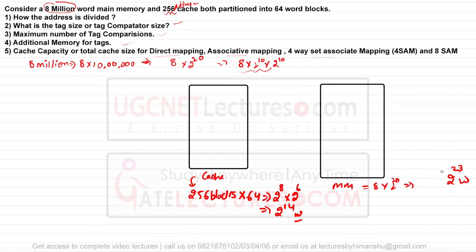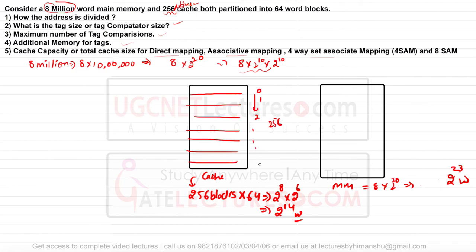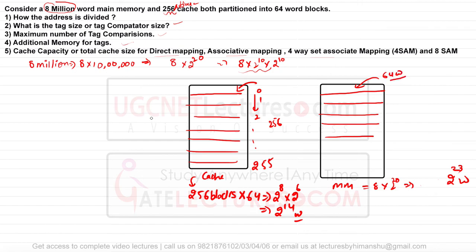The cache memory has 256 lines, numbered 0, 1, 2, up to 255. The size of every line — or block — is 64 words. The main memory is also divided into blocks of the same size, 64 words each.